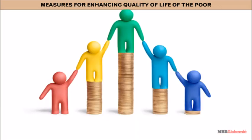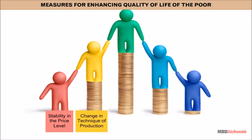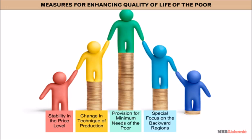Measures for enhancing the quality of life of the poor include: stability in the price level, change in technique of production, provision for minimum needs of the poor, special focus on backward regions, and an effective public distribution system.